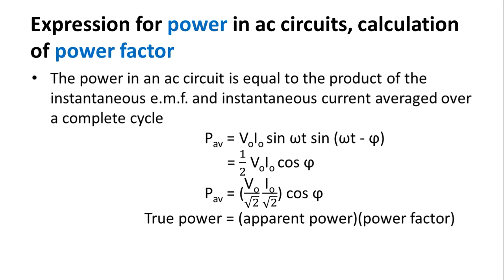If an alternating voltage V is applied to the AC circuit, we get the instantaneous current I. The applied instantaneous EMF is given by V = V₀ sin(ωt), and the corresponding current is I = I₀ sin(ωt − φ). To calculate the power, we have to multiply voltage and current. We get the expression P = V × I = V₀ sin(ωt) × I₀ sin(ωt − φ).